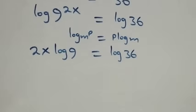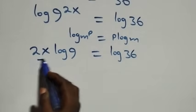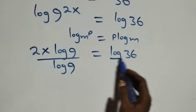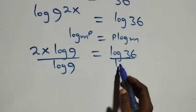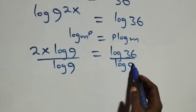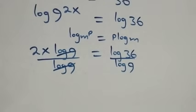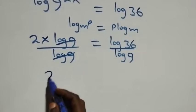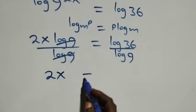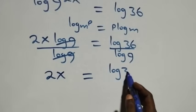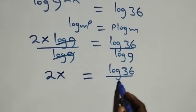The next step is to divide both sides by log 9. We divide this side by log 9 and also divide the other side by log 9. Log 9 cancels each other, and we are left with 2x, which equals log 36 over log 9.